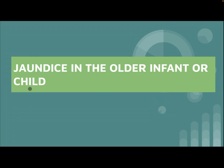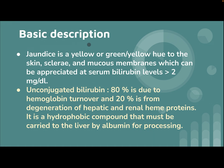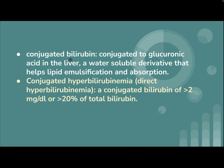Hi everyone. Our subject today is jaundice in the older infant or child. Jaundice is a yellow or green-yellow hue to the skin, sclera, and mucous membranes, which can be appreciated at a serum bilirubin level more than two milligrams per deciliter. Conjugated bilirubin — 80% is due to hemoglobin turnover and 20% from degeneration of hepatic and renal heme proteins. It is a hydrophobic compound that must be carried to the liver by albumin for processing.